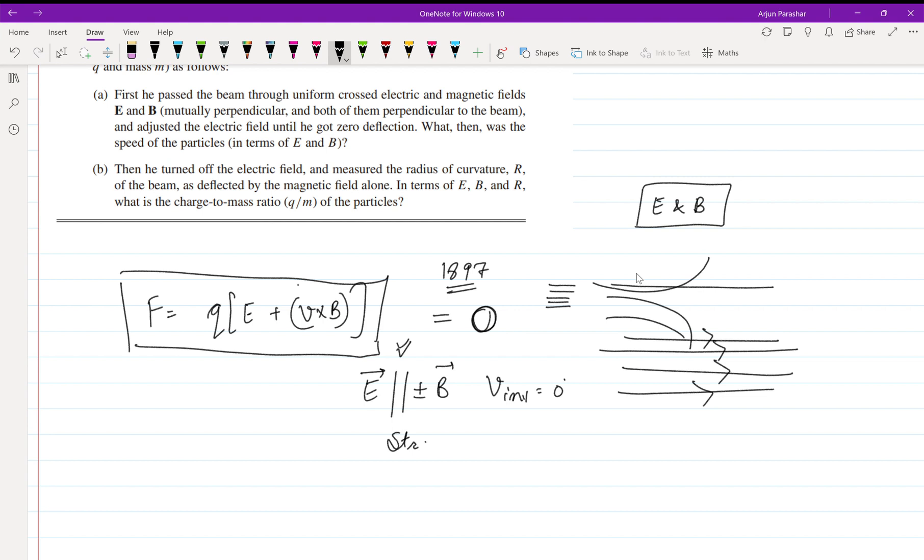Just apply this formula: q(E + v × B) = 0, because he has created zero deflection—straight lines. So E comes out to be v into B. Why am I writing v into B?